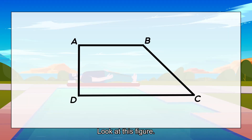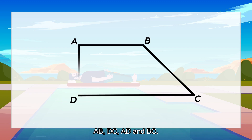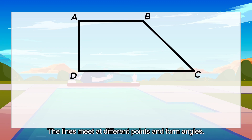Look at this figure. It is made up of four lines: A-B, D-C, A-D, and B-C. The lines meet at different points and form angles.